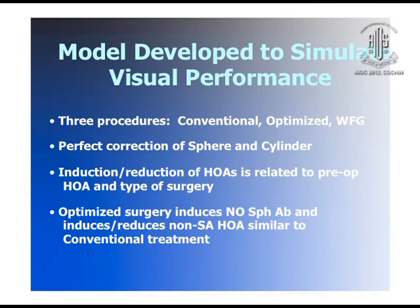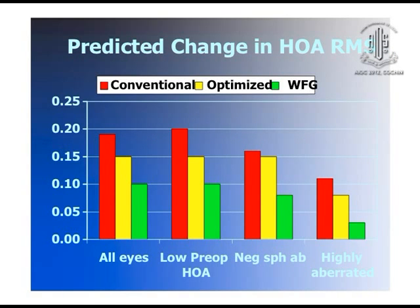There was a model developed to simulate the visual performance and assess the outcome of all three procedures — conventional, optimized, and wavefront-guided. In this model, a perfect correction of sphere and cylinder could be achieved, and the higher order aberration would depend on the pre-operative level and what kind of surgery the model was subjected to. If you see the predicted change in higher order aberration RMS values and compare it with all three techniques, the wavefront-guided shows less higher order aberration in all cases — whether the eye had low pre-operative higher order aberration or whether the eye was highly aberrated pre-operatively. The wavefront-guided would ultimately give a lower RMS value of higher order aberration.